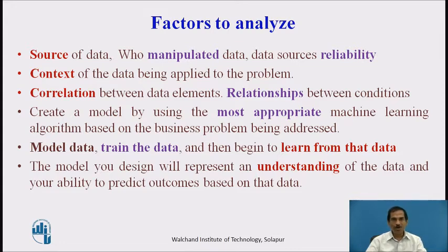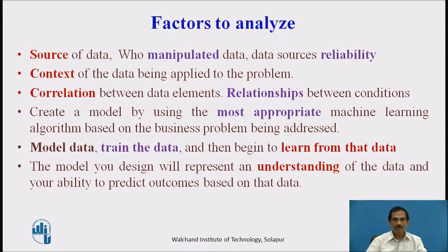We have to create a model using the most appropriate machine learning algorithms based on the business problem being addressed. For example, if it is a supermarket problem, then an association rule algorithm would be more preferred. But if it is an optimization problem, it is better to use a genetic algorithm.